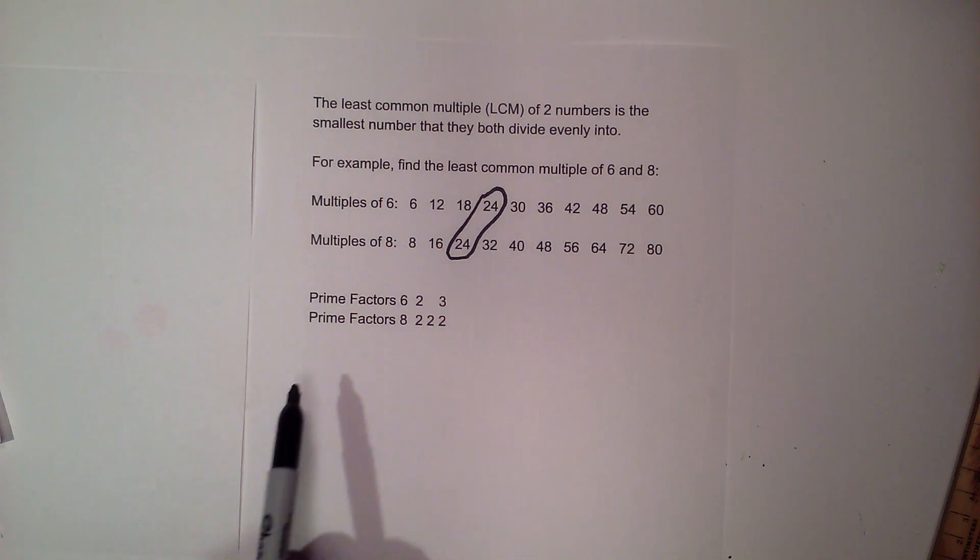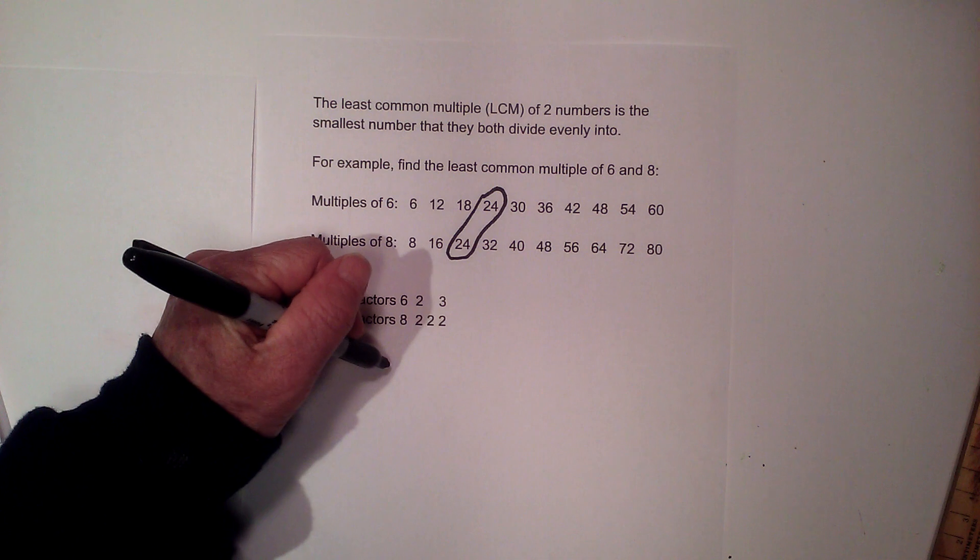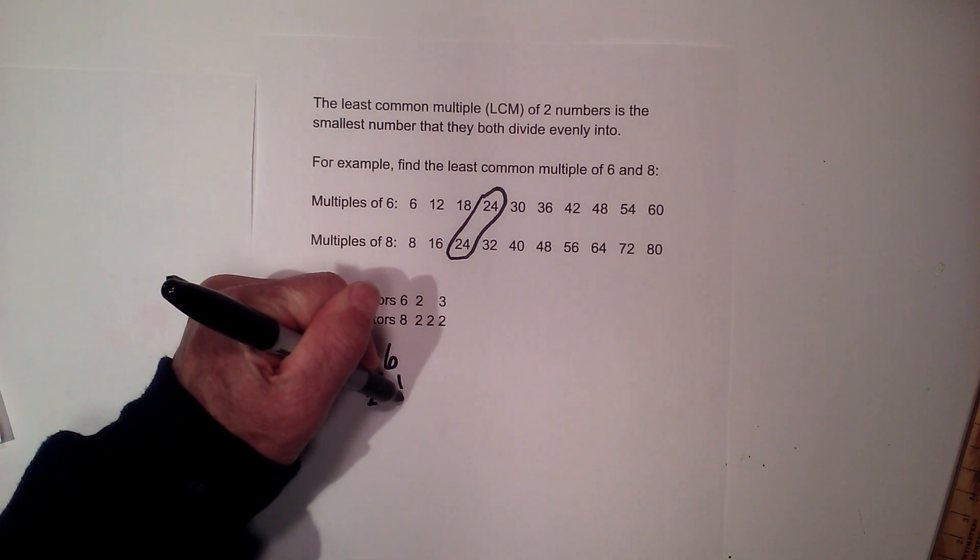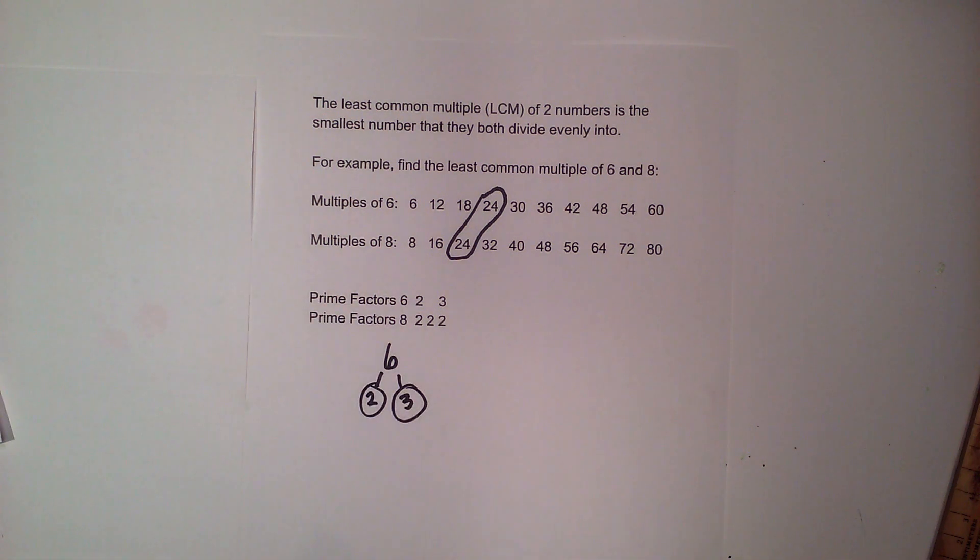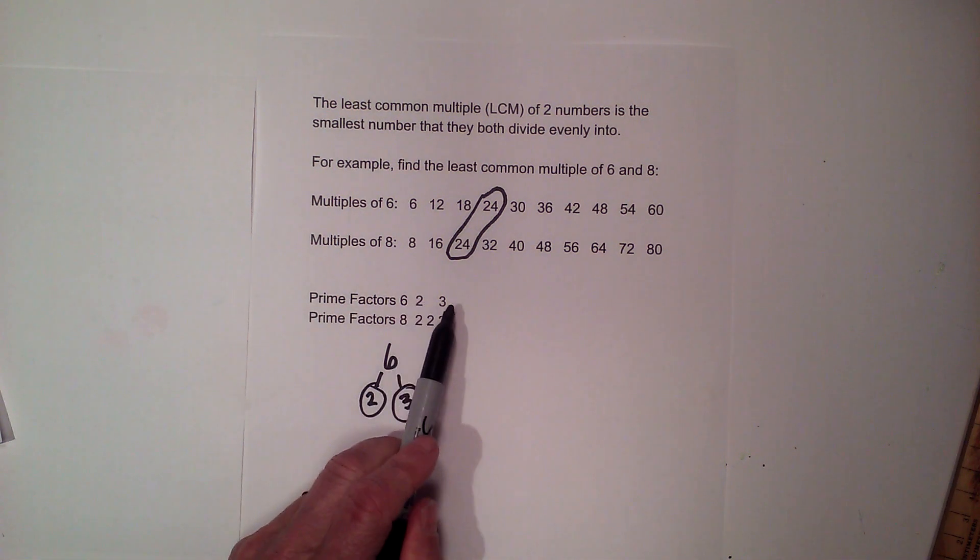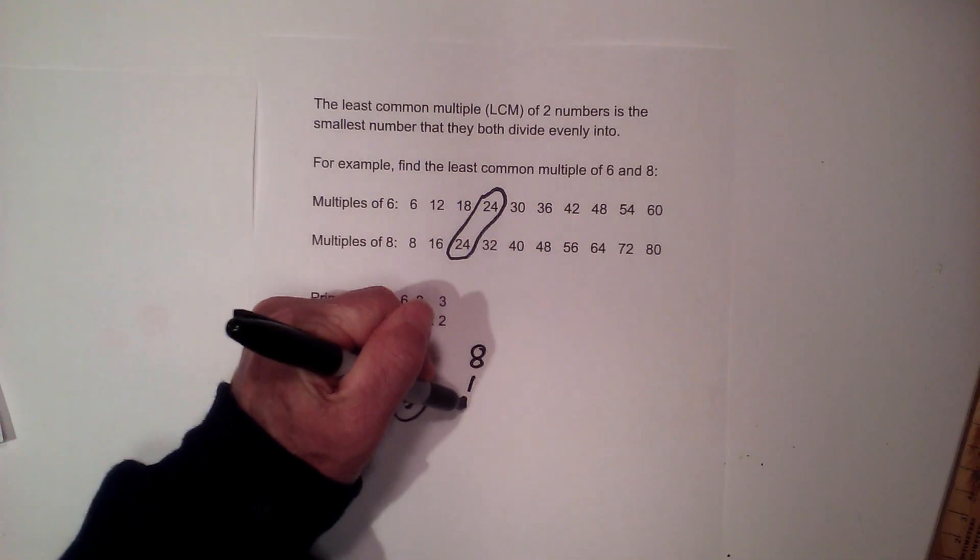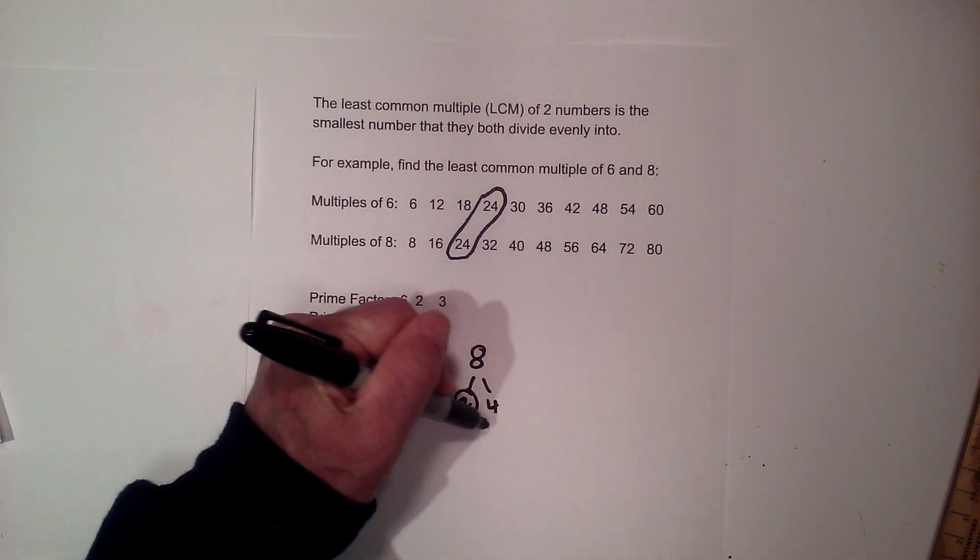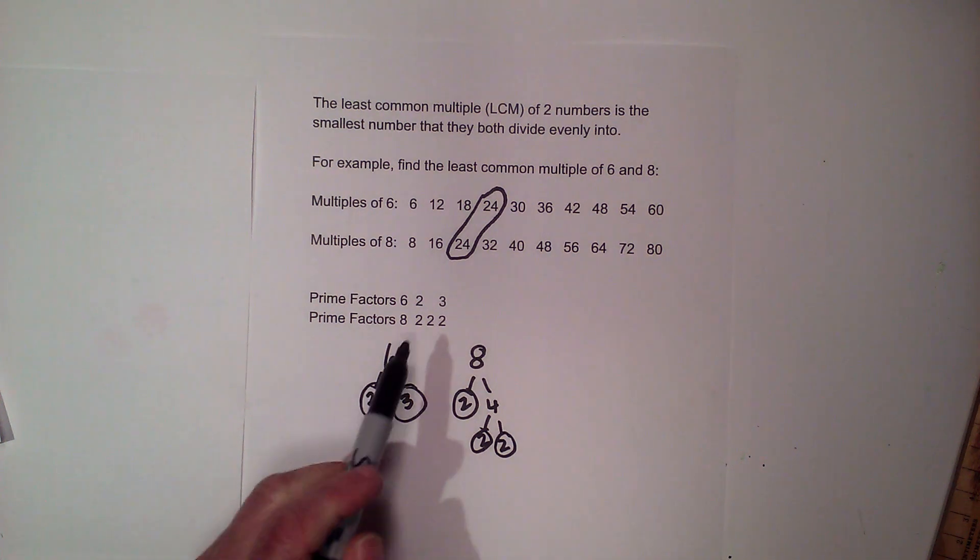The next way is finding prime factors. So you write out the prime factors. I like to use a factor tree. For instance, six: two times three equals six. Circle two and three because they are prime. So that's how I got two and three. And then for eight, the same thing: two times four equals eight, two times two equals four. Circle them, so that's how I get two times two times two.